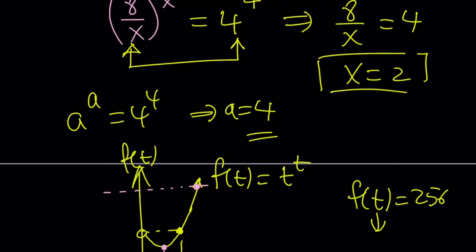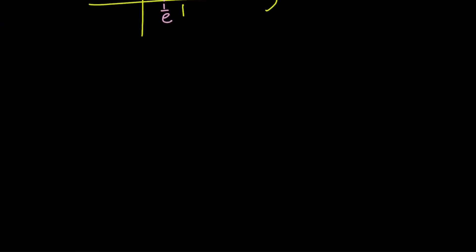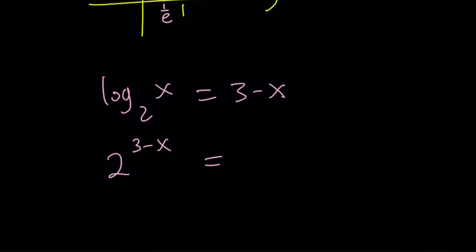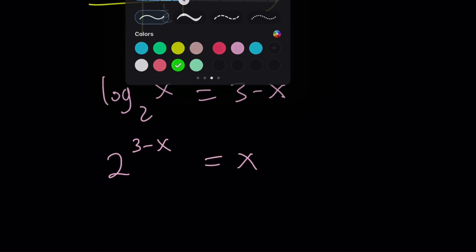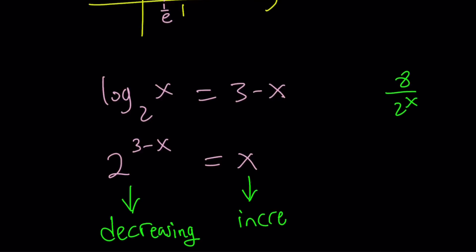Is there another way to look at this problem? Absolutely. We could also look at the problem differently: log base 2 of x equals 3 minus x, and 2 to the power of 3 minus x equals x. Here we have a decreasing function — because its exponent has negative x, or it's like 8 over 2 to the x — and an increasing linear function with a positive slope. So they have to intersect at a single point.